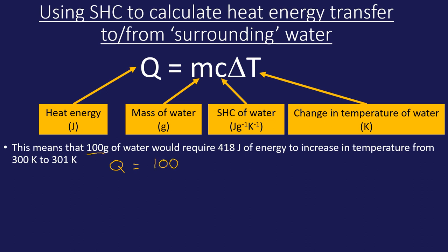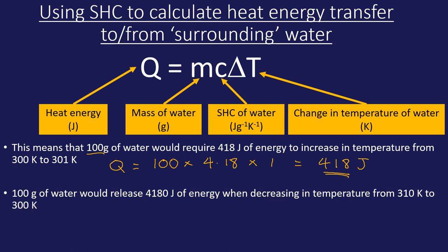To measure the energy change: Q = m × c × ΔT. Mass of water is 100 g, specific heat capacity is 4.18 (supplied in the question), and the temperature change from 300 to 301 K is just 1. So: 100 × 4.18 × 1 = 418 joules. For the cooling example, mass is 100 g again, temperature change from 310 to 300 K is 10, giving an energy change of 4180 joules.